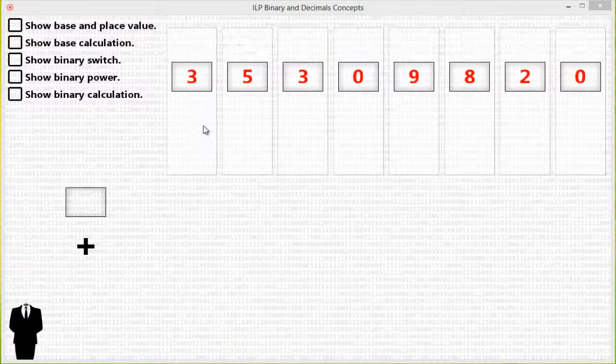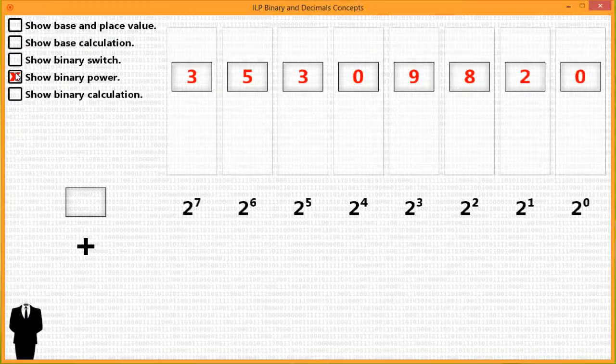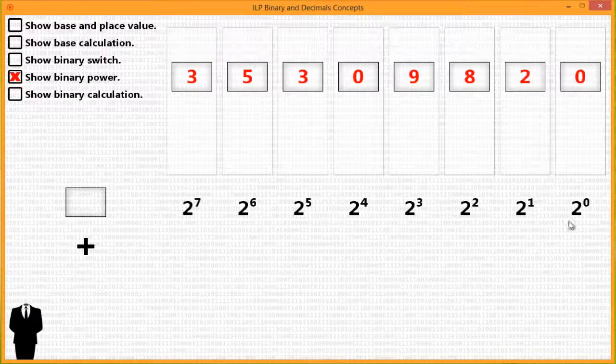Because there's only 2 symbols, the base of a binary system is 2. And like the decimal system, it also has a place value, and the place value is represented by the power.